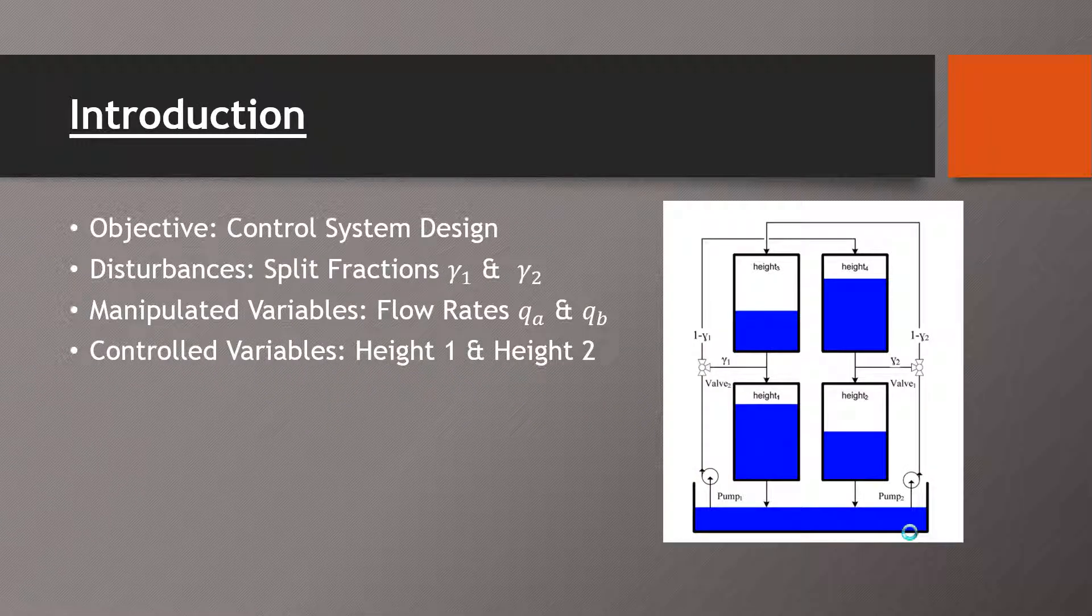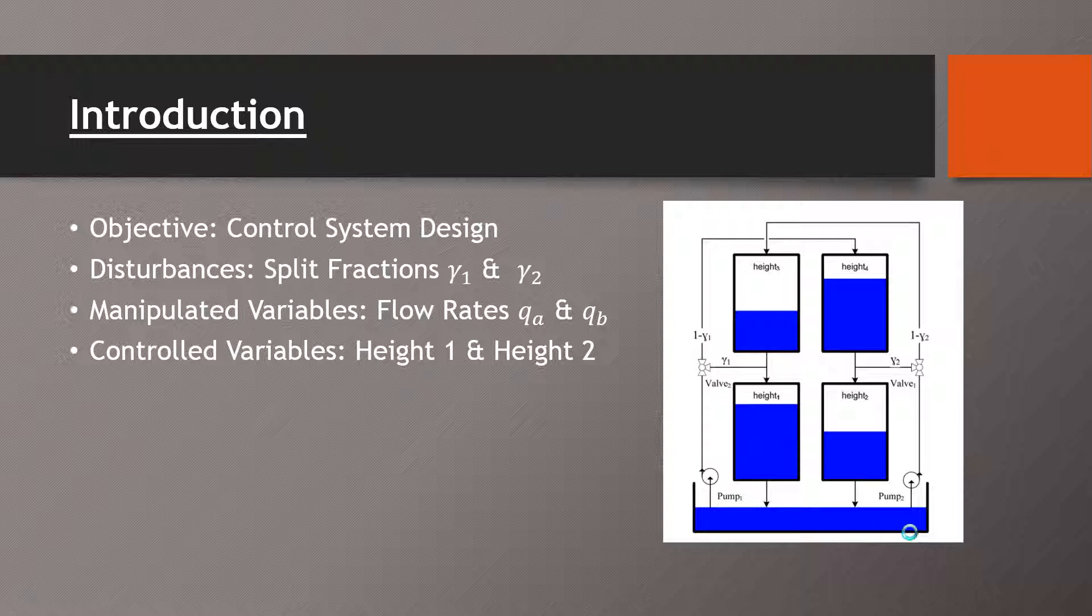Just to give a brief introduction of the system, you can see in the figure there are four gravity drain tanks and we will be controlling the heights of the lower two tanks. Our disturbances will be the split fractions of the valves on either side and the manipulated variable will be the flow rates of each pump. Our objective is to design a control system that will stabilize any changes in disturbance or set point.